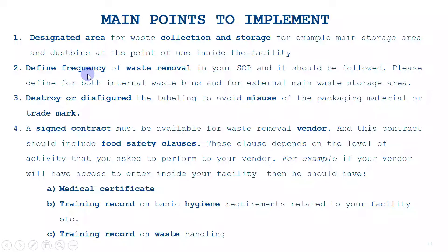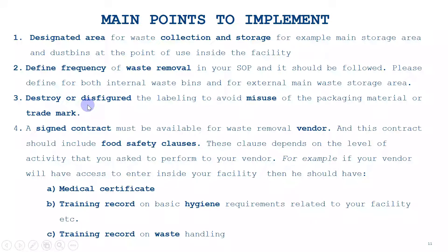For outside the premises, you need to notice after how much time your waste bins become full, and define the frequency accordingly. For example, if your main waste area becomes full after 15 days, you define that you are removing waste from the waste area every 15 days to avoid overflow. Third is destroying or disfiguring the labeling.